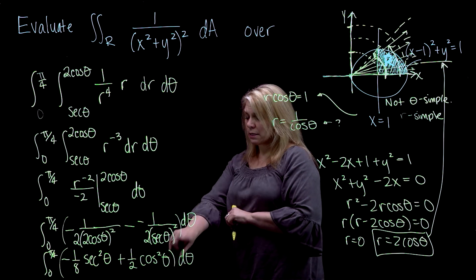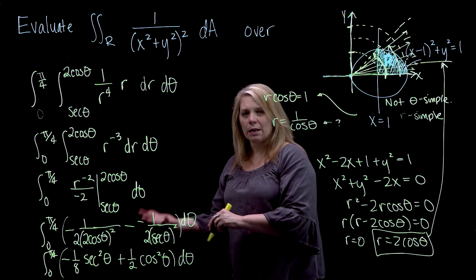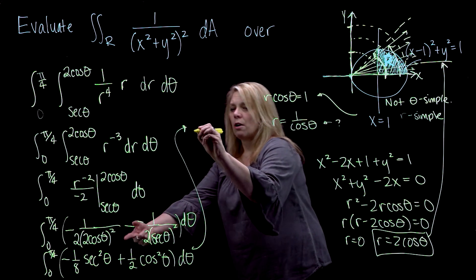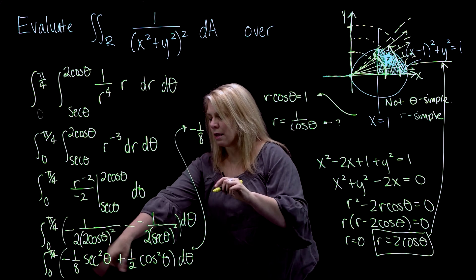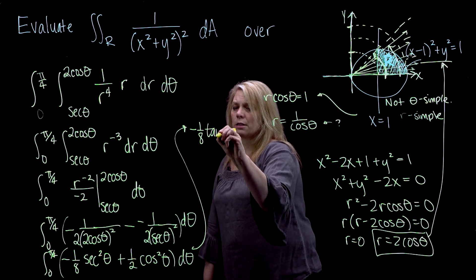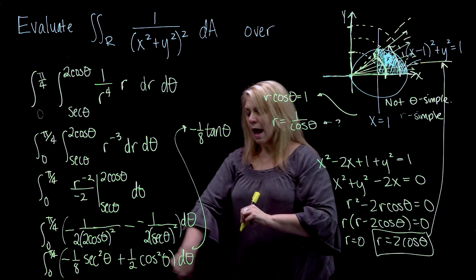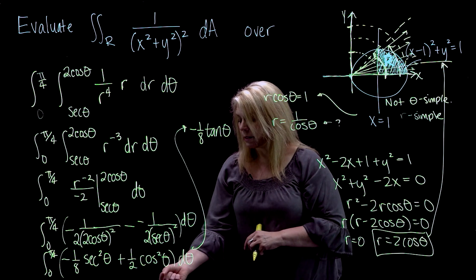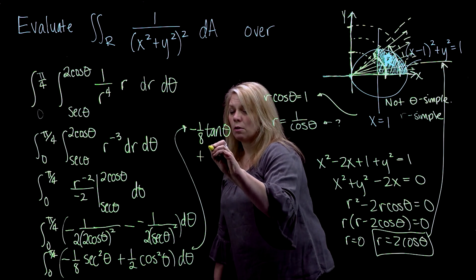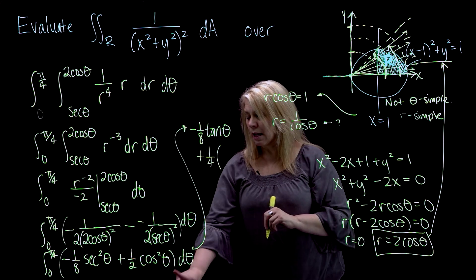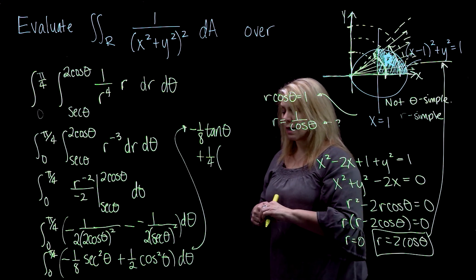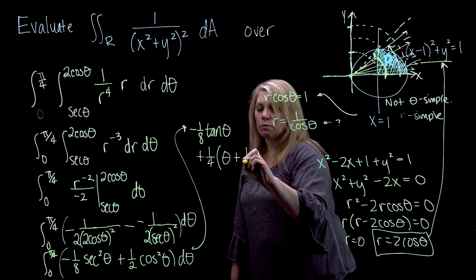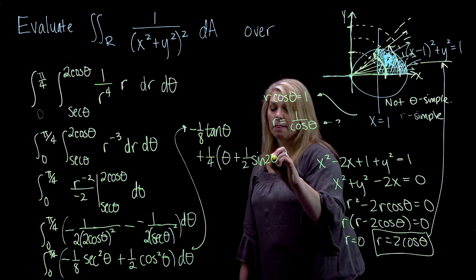Using the double angle identity, I'll write the antiderivatives directly. Negative 1 eighth times tangent theta, plus 1 fourth — picking up two factors of one half from the double angle identity — times the integral of 1 plus cosine 2 theta, which gives theta plus 1 half sine 2 theta, all evaluated from 0 to pi over 4.